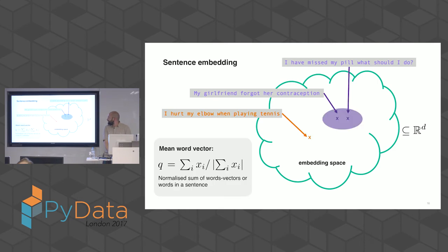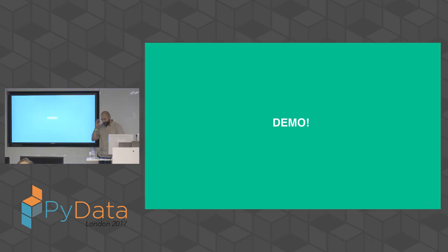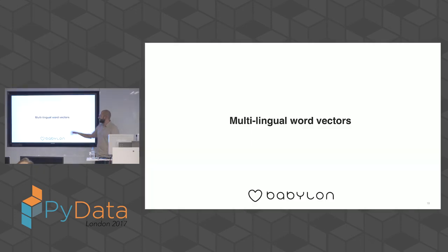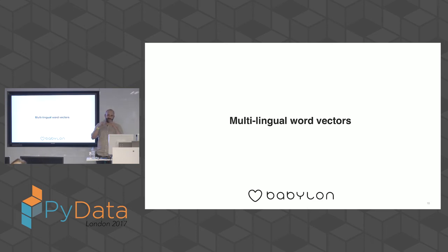Now I want to talk about something we recently released that I think is a bit more exciting: multilingual word vectors. So far I've been talking about monolingual word vectors — it only makes sense to compare the similarity between two words if they're from the same language, trained on the same corpus.